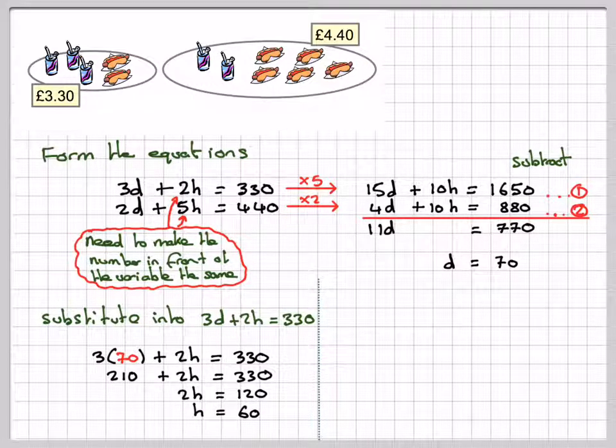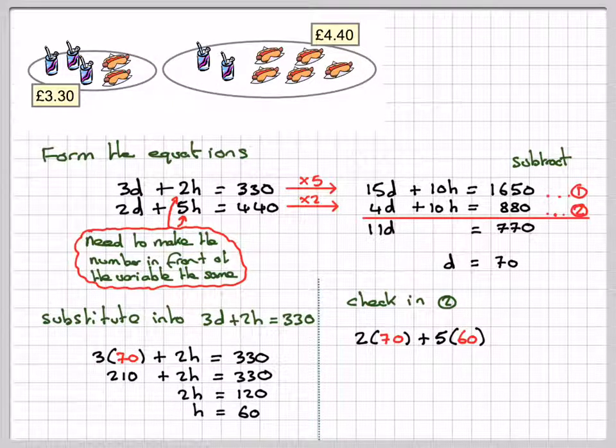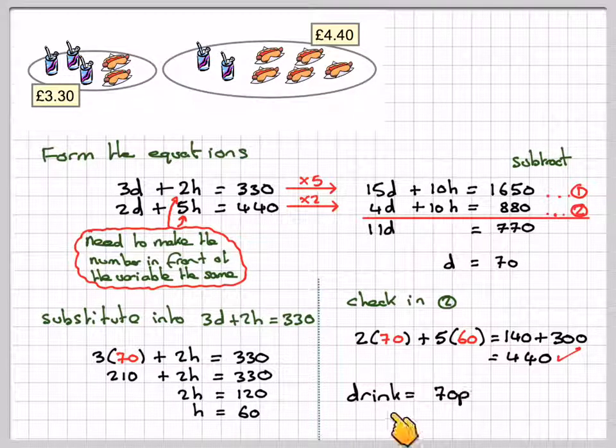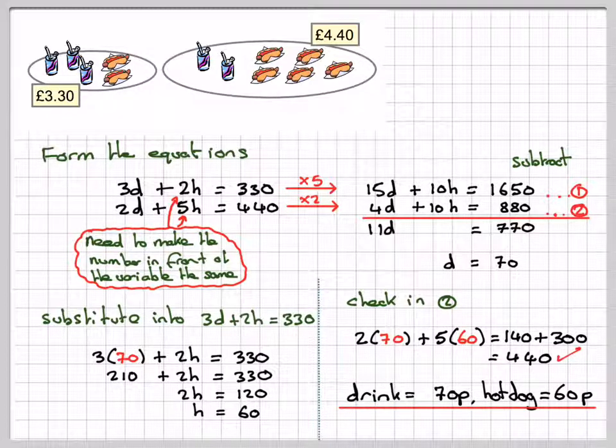We should just check in the one that we did not use, this one here. I'm going to check, so it's going to be 2 times 70 plus 5 times 60, and that's 140. 5 times 60 is 300. 140 plus 300 makes 440. Did we get the right answer? The answer is yes. So therefore, a drink costs 70p, hot dog costs 60p.